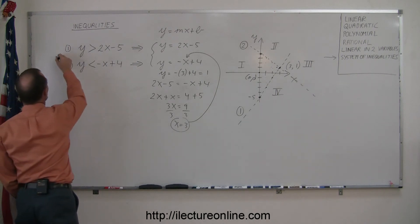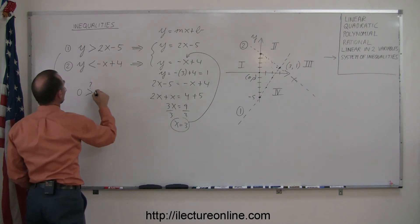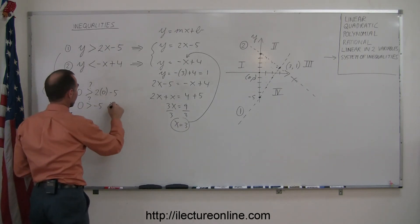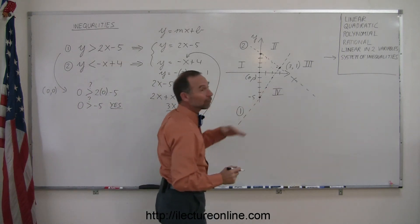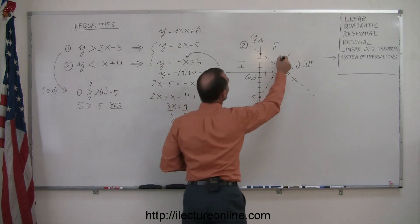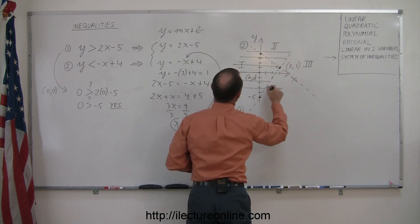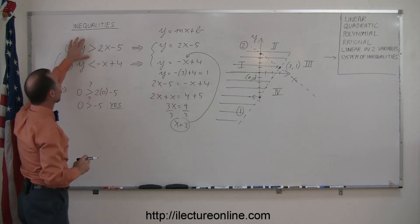We'll plug in that value, so we'll take this equation right here, we plug in the value 0, 0, and we get 0 is greater than, question mark, 2 times 0 minus 5. So 0 is greater than, question mark, minus 5. And the answer is yes. That is true. So I picked the point on the correct side of this line. In other words, I picked the point that is in the region that satisfies the inequality, and I'm going to go ahead and shade that. Okay, so everything to the left of line number one is part of the solution for the first inequality.